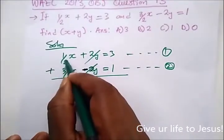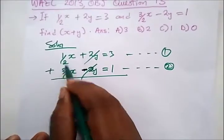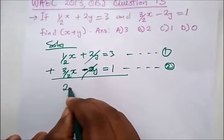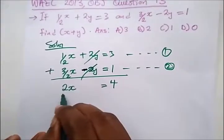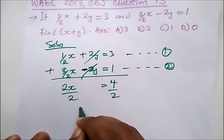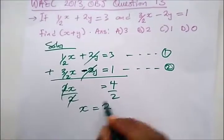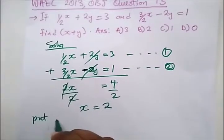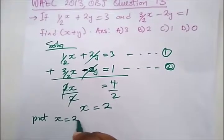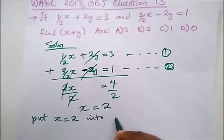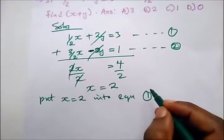And to add half plus 3 over 2, that's half plus 1 and a half, that will give us 2. And adding this will give us 4. So dividing both sides by 2 we have x equals 2. So putting the value of x equals 2 into equation 1, what are we going to have?